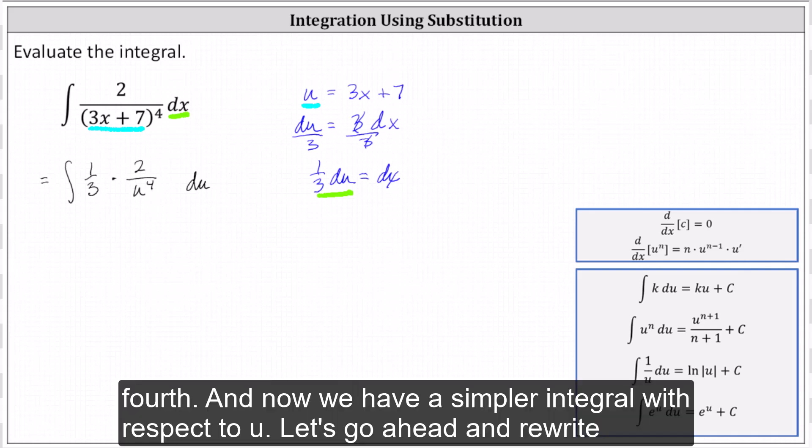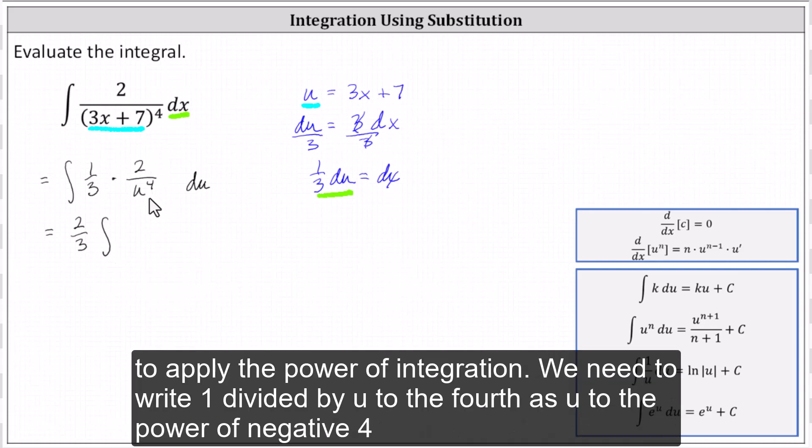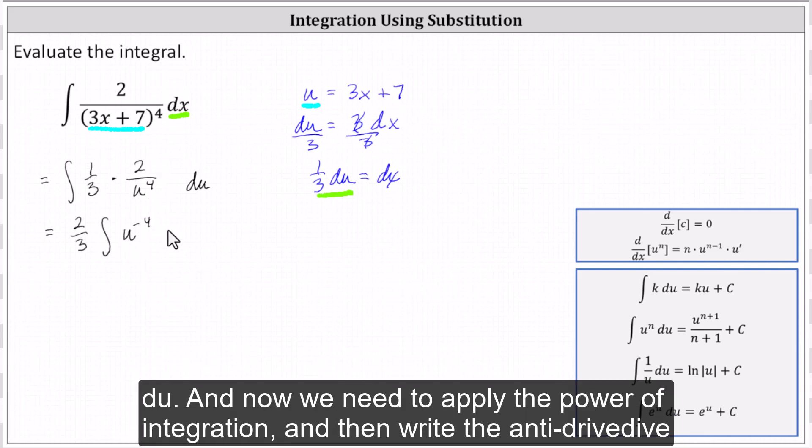And now we have a simpler integral with respect to u. Let's go ahead and rewrite this as 2/3 times the integral of, we would have 1 divided by u to the fourth, but to apply the power rule of integration, we need to write 1 divided by u to the fourth as u to the power of negative 4 du.